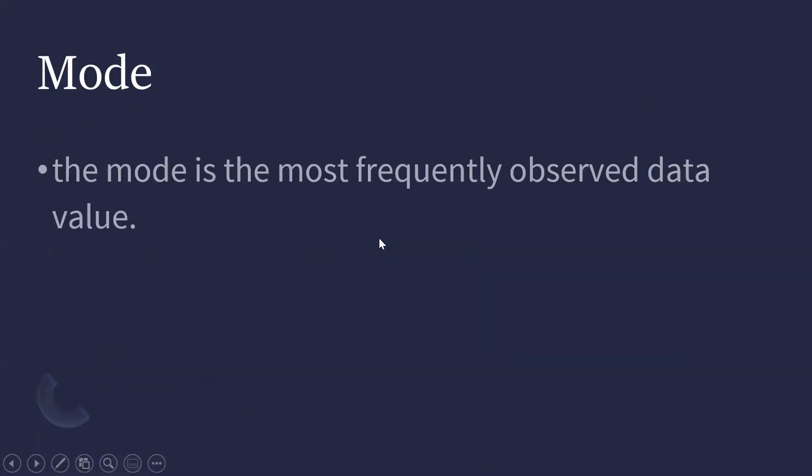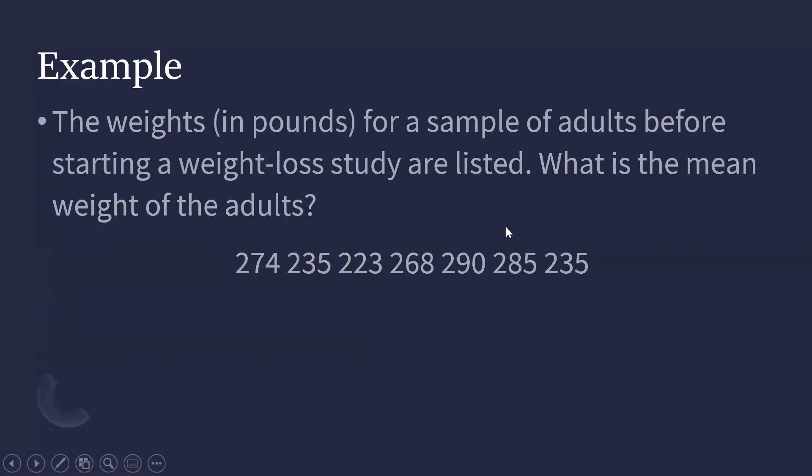Next is the mode. Mode is the most frequently observed data value. Let us find the mode of example number one. The most frequently appearing value here is 235. It appears twice, while the rest only appear once. Therefore, the mode is 235.